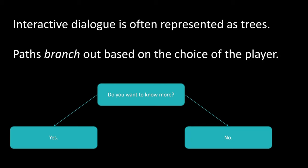Depending on what the player chooses, paths branch out in the tree metaphor based on the choices of the player. So for example, given the choice 'do you want to know more' and two different yes or no options, then depending on what the player chooses the game may change — the character or story progression may be different depending on the outcome of the player's choice.